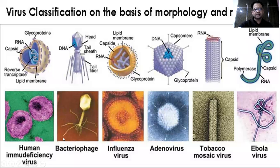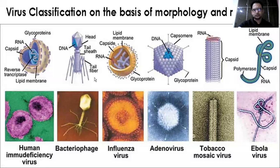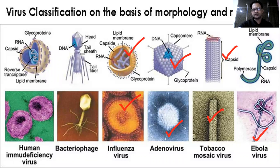For example, you can see here the human immunodeficiency virus, which is an enveloped virus. This is a bacteriophage virus viewed from an electron microscope alongside its artistic representation. The influenza virus is shown, as is the adenovirus. Also shown is a rod-shaped virus and the Ebola virus. However, all of these diagrams are just for your assistance and are not required from your textbook.